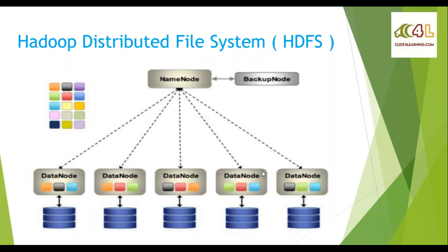The colorful blocks displayed on the left side are nothing but parts of a big file. The file was too big to be stored on a single system, so Hadoop has split that file into multiple smaller parts. Those multiple smaller parts are stored distributively on multiple machines — we are not overloading a single system. Multiple machines are participating in the storage. This is your distributed storage — the storage part of Hadoop (HDFS).